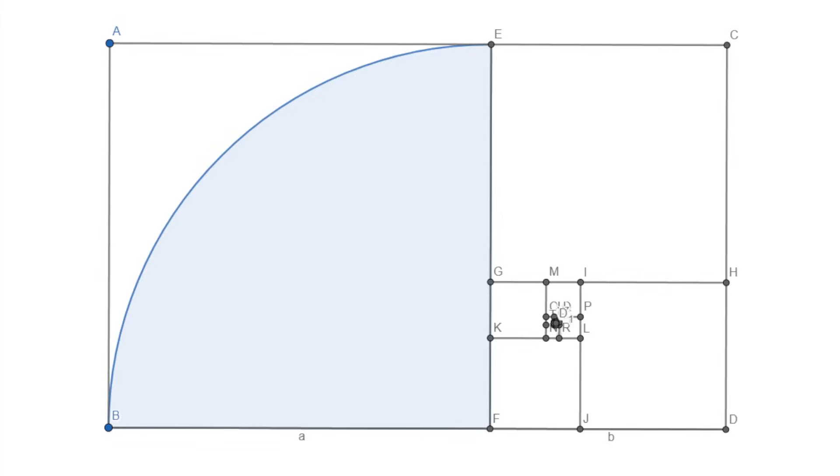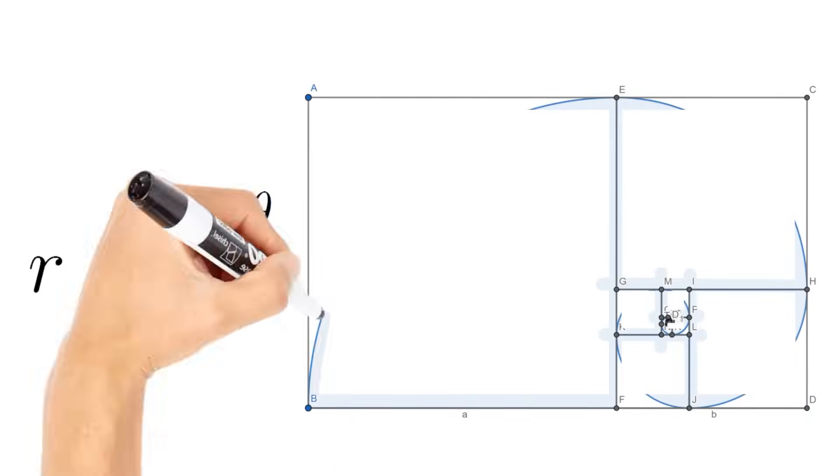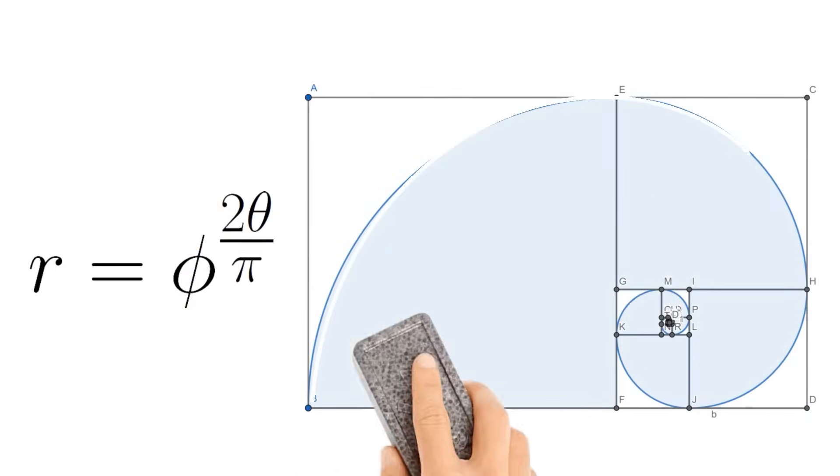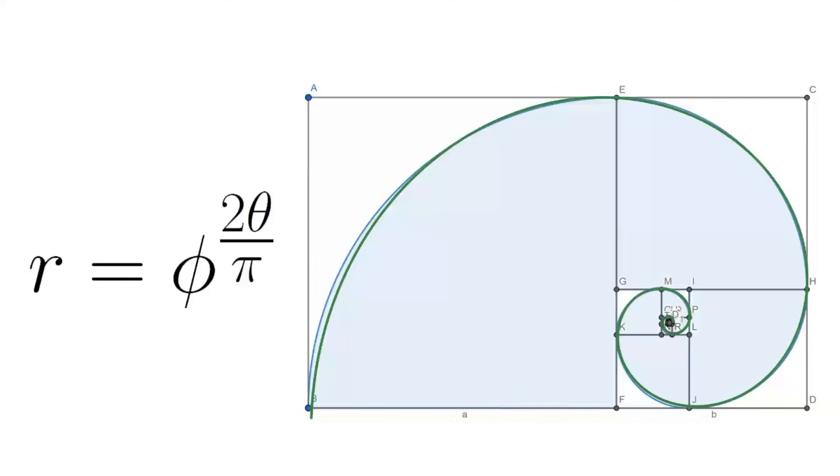And in each of the squares, we draw a quarter circle arc from one corner to its diagonal opposite. We get a spiraling curve that very closely approximates a golden spiral. Specifically, if we set a equal to one, then the spiral generated by this rectangle closely approximates the golden spiral given by the polar equation r equals phi to the two theta over pi. Pretty crazy. Let's get back to the video.